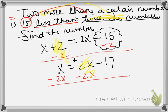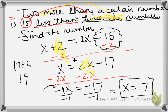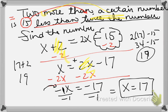Now I subtract 2x from both sides. This becomes a zero pair and we get negative x = negative 17. Whenever you have a negative variable at the end, you divide everything by negative 1 to change all signs to the opposite, which gives us x = 17. Checking: 17 + 2 = 19, and 2 times 17 minus 15 is 34 minus 15 = 19. Both sides equal 19, so it checks out.